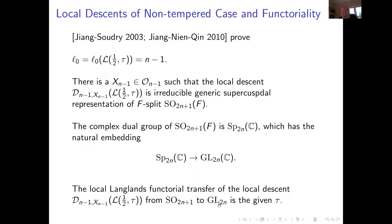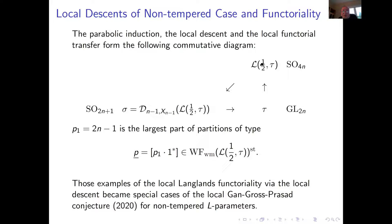This descent is an irreducible generic supercuspidal representation of Sp. Since the complex dual group is Sp, you have this embedding — the Langlands functorial transfer of this descent back to GL is exactly τ. So you have a diagram: the Langlands functorial transfer and descent commute. We showed that this Langlands functorial transfer of this descent back to GL is just τ, and the largest partition is in the wavefront set. This justifies the conjecture with examples.